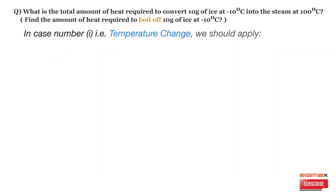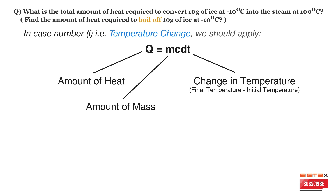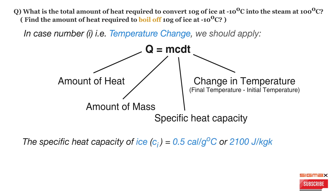In case number 1 — that is, temperature change — we apply the formula Q = mcΔT to calculate the amount of heat required. Here, Q represents the amount of heat, m represents mass, ΔT represents the change in temperature (final temperature minus initial temperature), and c represents specific heat capacity. For this problem, the specific heat capacity of ice, c_i, is 0.5 calorie per gram per degree Celsius in CGS units, or 2100 joule per kg per kelvin in SI units.